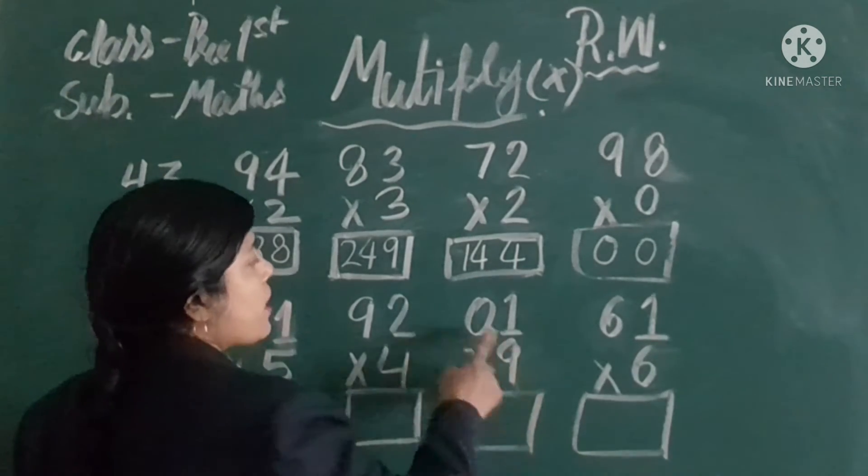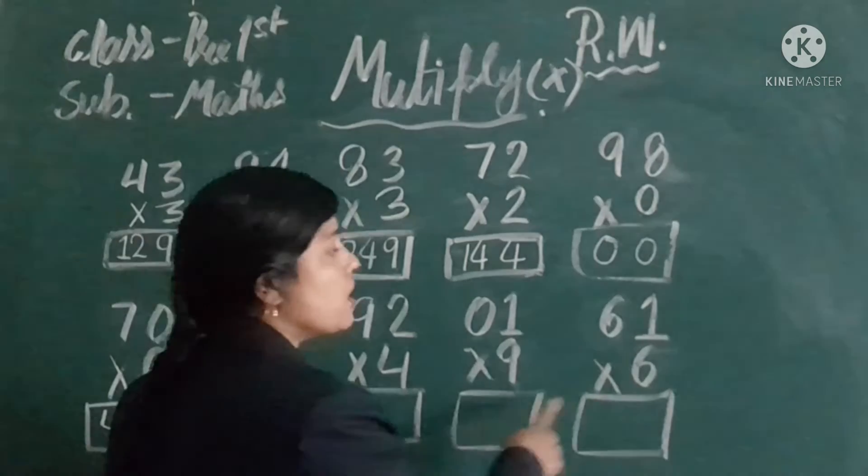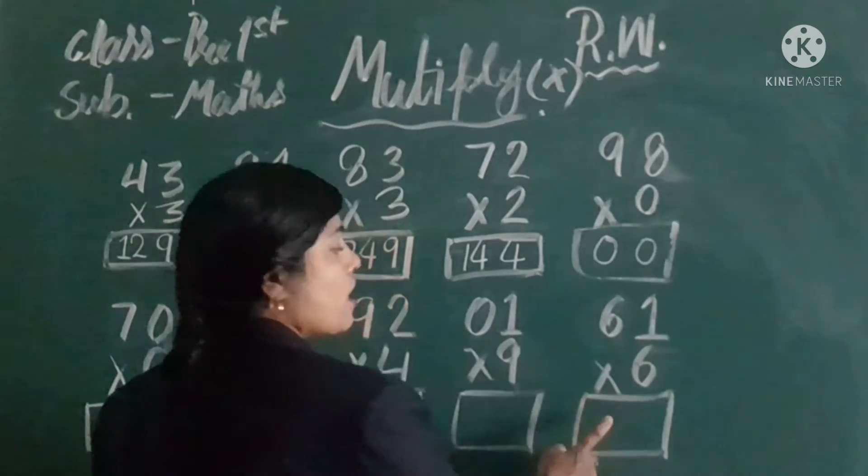9, 1's are 9, 9, 9, 0, 0. 6, 1's are 6, 6, 6, 6's are 36. Okay?